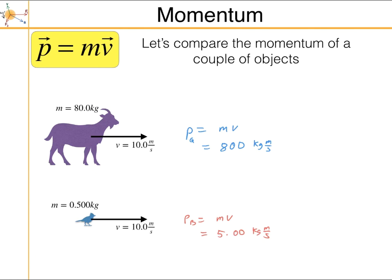Two objects with the same speed — the one with more mass has more momentum, and that's going to be important for things like collisions.